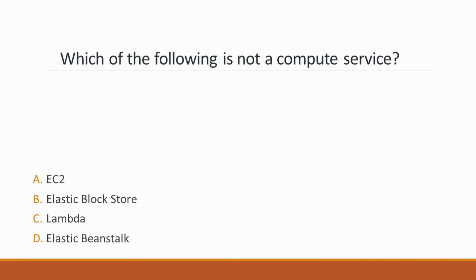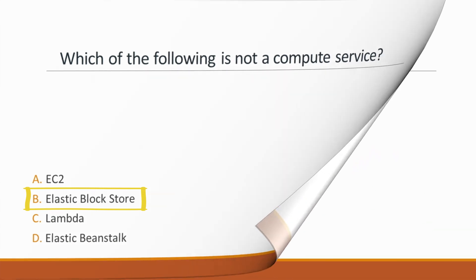Next question: Which of the following is not a compute service? Options: A. EC2, B. Elastic Block Store, C. Lambda, D. Elastic Beanstalk. Correct answer is option B, EBS — Elastic Block Store — because it is a storage service. All others are compute services.